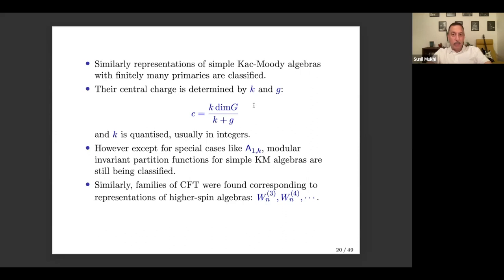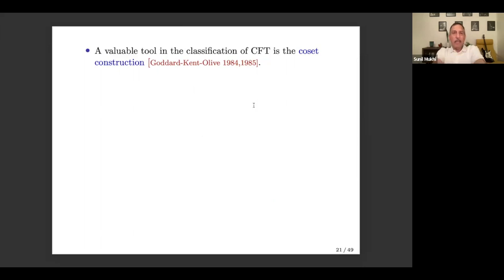Once these two seminal papers came out, other groups — many from the Landau Institute in the then Soviet Union — considered higher spin algebras called W_3, W_4, and so on, and worked out their representations. The approach was: assume a particular algebra, then find what representations are allowed — the minimal series for those symmetries. Most people think this somehow classifies all of 2D CFT, but as I'll argue, it's very incomplete and misleading to think this amounts to a full classification.